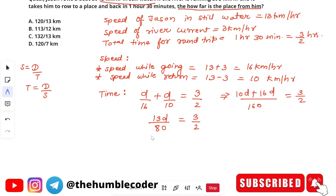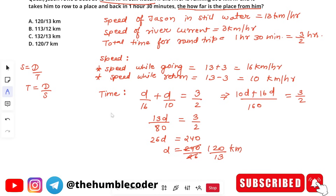Based on the equation 26d = 240, we find d = 240/26. Cancelling by 2, we get d = 120/13 km. The correct answer for this question is option A, which is 120/13 km. Let's move on to the next question.